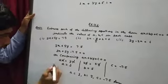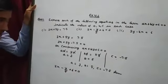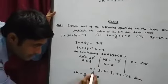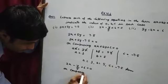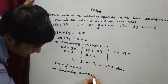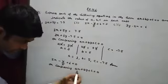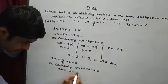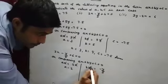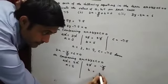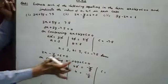For the second question: 2x minus y upon 5 plus 6 equal to 0. From here you have to find the values of a, b, and c. On comparing with ax plus by plus c equal to 0 — x to x, y to y, constant to constant — ax equals 2x so a equals 2. By equals minus y upon 5 so b equals minus 1 upon 5. And c equals 6.